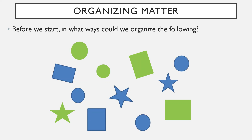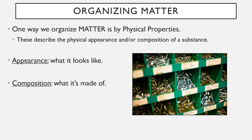One obvious way to organize the shapes would be by color — you could separate them into blue ones versus green ones. Another way is by shape: circles versus rectangles versus stars. You could also combine both — all the green circles together, all the blue circles in another group, and so on. The point is there are different qualities we can use to organize them into certain groups.